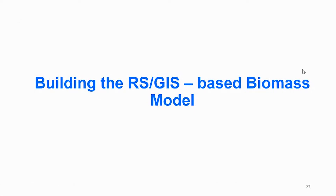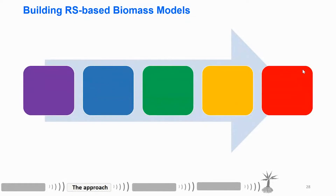Now we come to building the remote sensing GIS-based biomass model. For building a remote sensing-based biomass model, there are five steps. The first step is to identify the remote sensing variables. We use seven single bands of Landsat and also 13 vegetation indices after a comprehensive literature review.